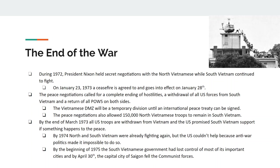How does the war end? Secret negotiations that Nixon promised start in 1972, with South Vietnam having no idea they are happening. South Vietnam continues fighting while Nixon and the North Vietnamese negotiate a ceasefire. On January 23rd, 1973, the ceasefire is agreed to and made public. South Vietnam basically says, 'What the heck? We didn't know anything about this.' A ceasefire goes into effect on January 28th.